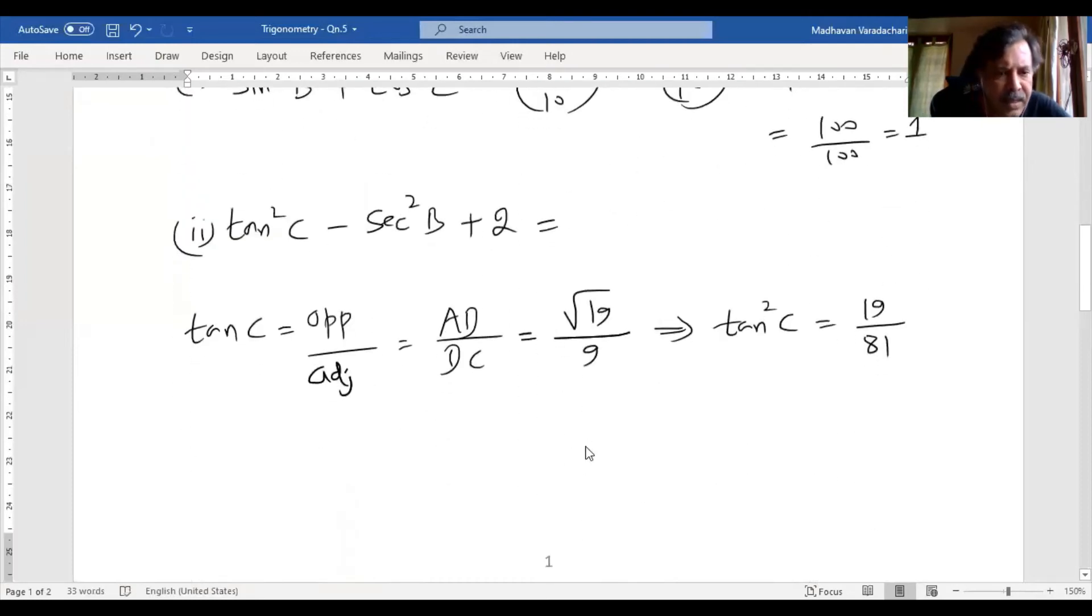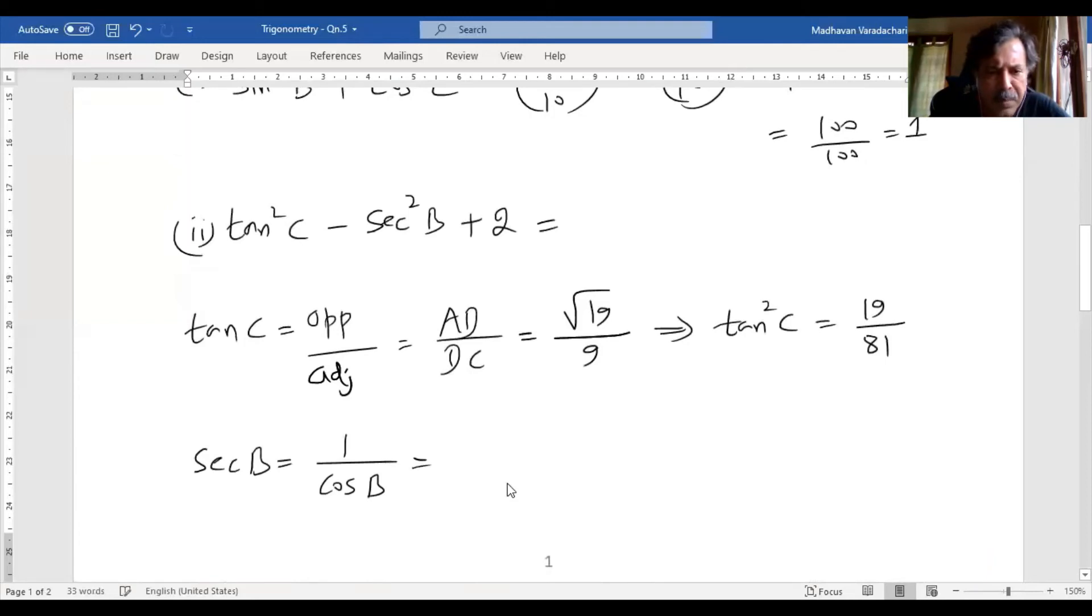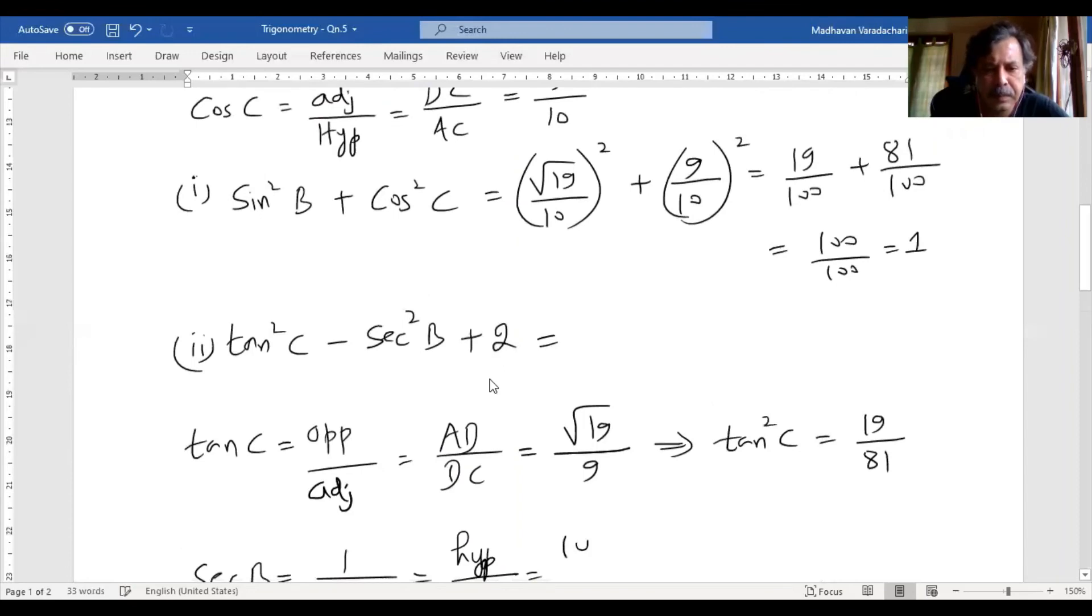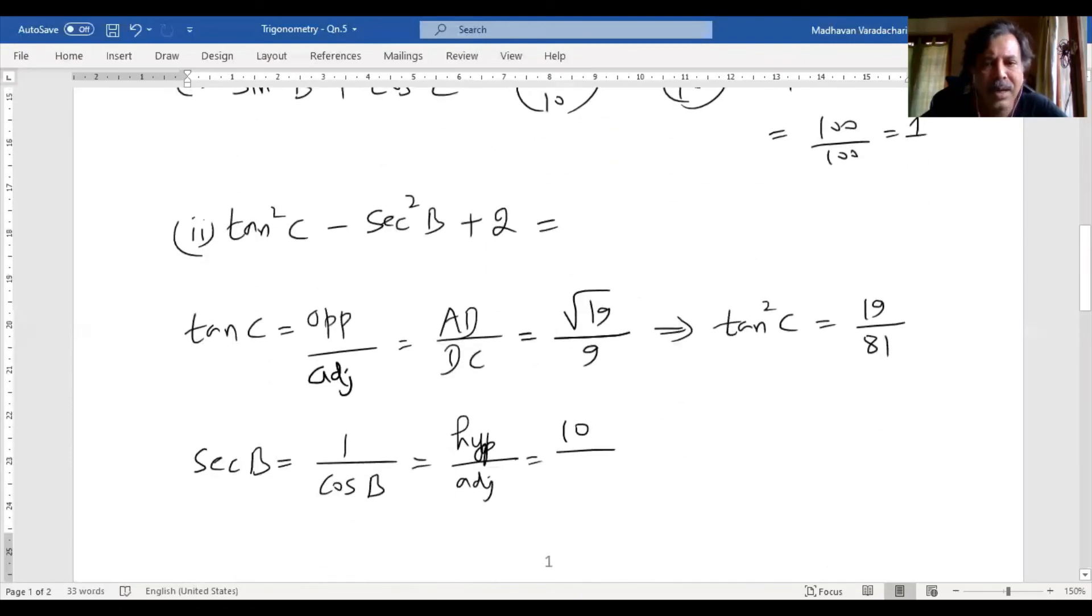Next, secant B. It is inverse of cos or I can write it as 1 by cos B. Have we found out cos B? No, we didn't find. So cos means it is adjacent by hypotenuse. Since it is inverse here, hypotenuse by adjacent. Now let us go back to that angle. What is the hypotenuse for B? It is 10. What is the adjacent for B? Adjacent for B is BD. BD is nothing but 9. So this implies secant square B will be 100 by 81.